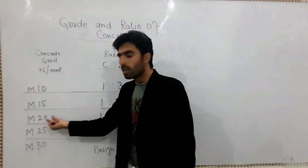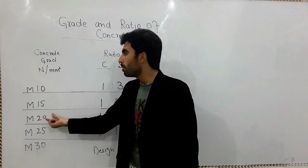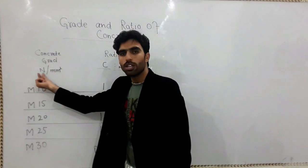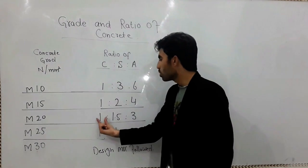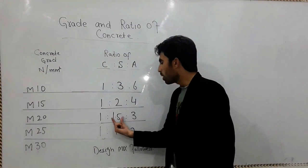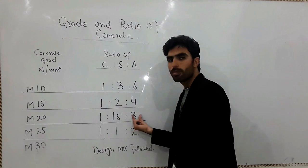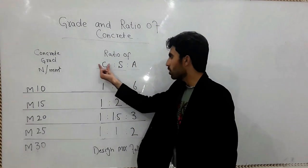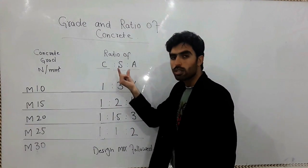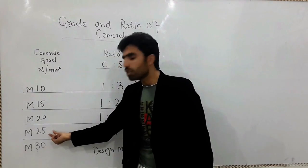If you need M20, for the M20 means 20 Newton per mm square, you must use ratio 1:1.5:3. This is the specification - CSA - cement, sand, aggregate.